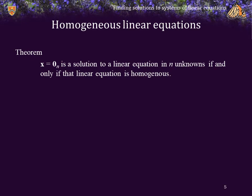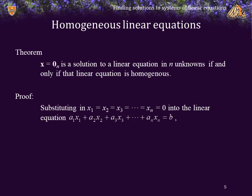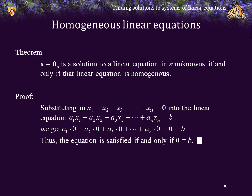Theorem. The n-dimensional zero vector is a solution to a linear equation with n unknowns if and only if that linear equation is homogeneous. Proof. Substituting 0 for each of the unknowns into this linear equation, we get that the left-hand side is equal to 0. Now, if it does actually satisfy the equation, then 0 must equal b. Thus, the equation is satisfied if and only if b is equal to 0. As a consequence, we immediately know that if a linear equation is homogeneous, then the zero vector is a solution, and if it is not homogeneous, the zero vector is not a solution.